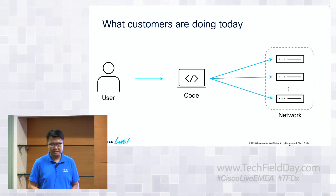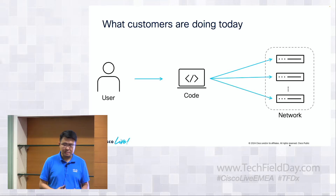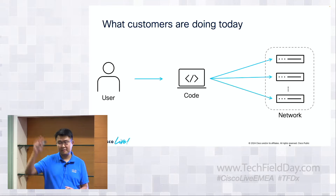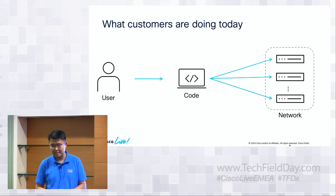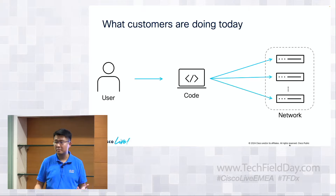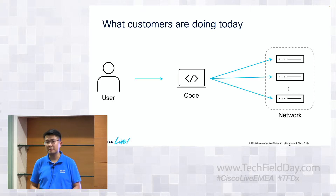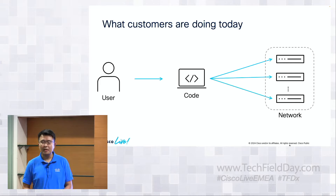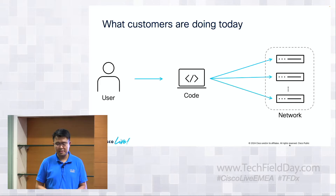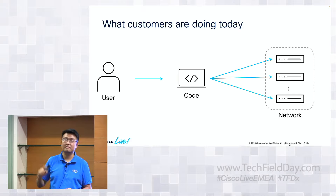First, what customers are doing today. You have a bunch of network devices and you can use whatever automation approach — Ansible, Terraform, Python, or even just SSH. No one is judging. You can automate network configuration individually by talking to each device.